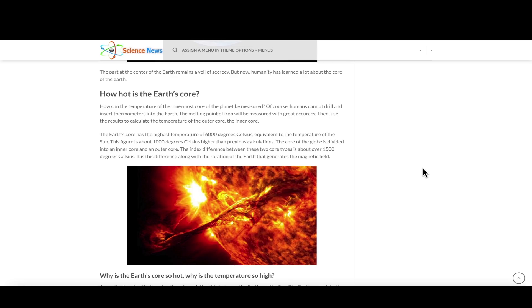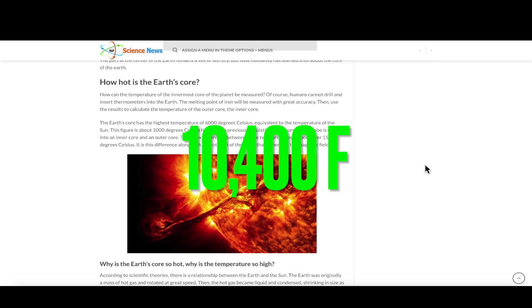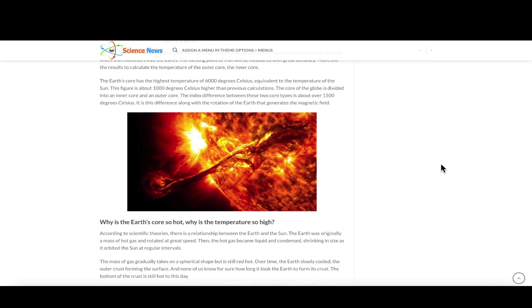I'm going to read a couple of paragraphs from this article and then offer a theory. How hot is the earth's core? The earth's core has the highest temperature of 6,000 degrees Celsius, that's over 10,000 degrees Fahrenheit, equivalent to the temperature of the sun. This figure is about 1,000 degrees Celsius higher than previous calculations. The core of the globe is divided into an inner core and an outer core. The index difference between those two core types is about 1,500 degrees Celsius. It's the difference along that rotation of the earth that generates the earth's magnetic field.